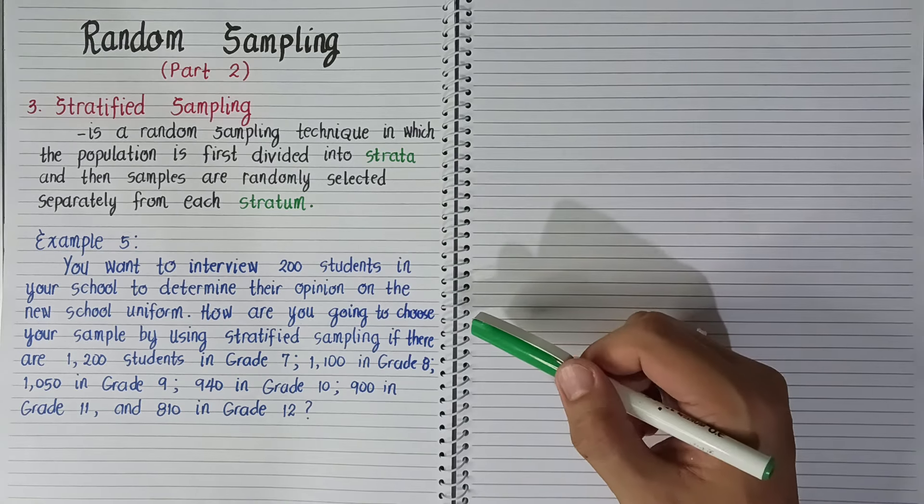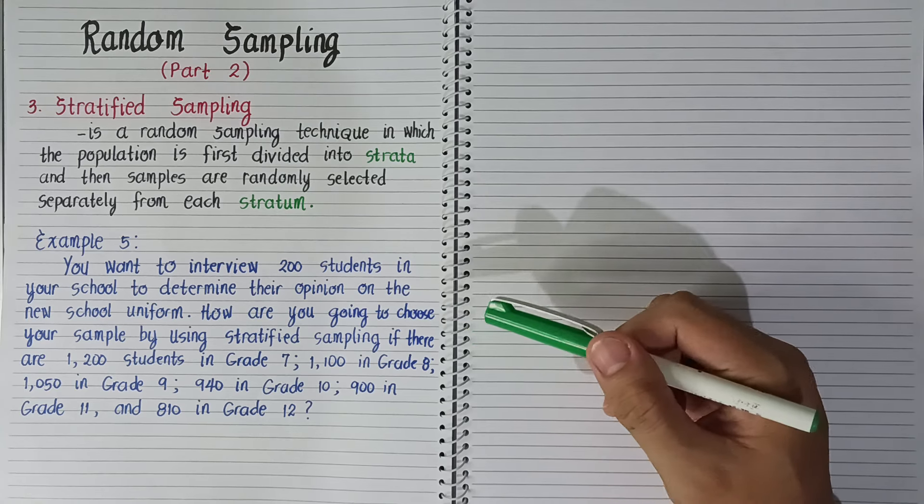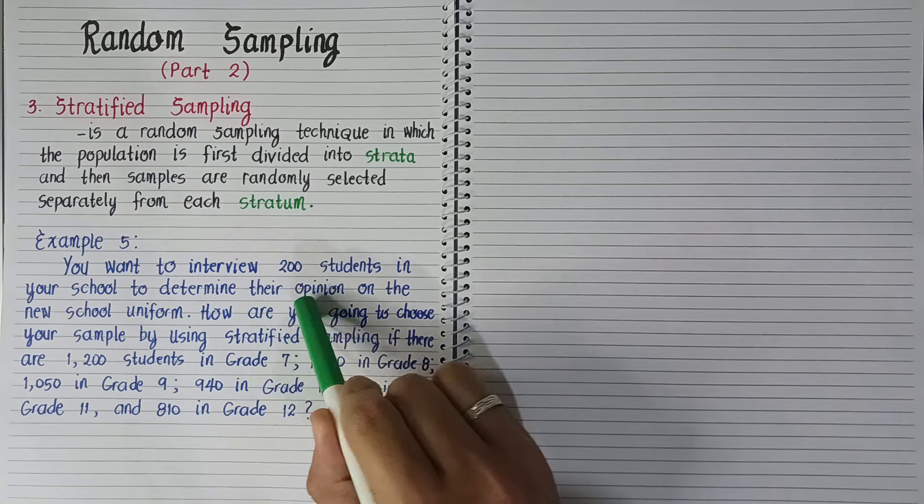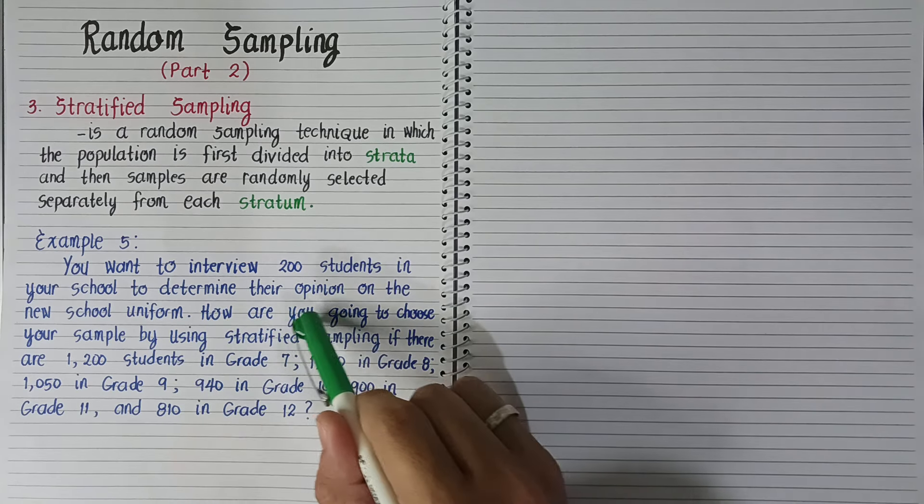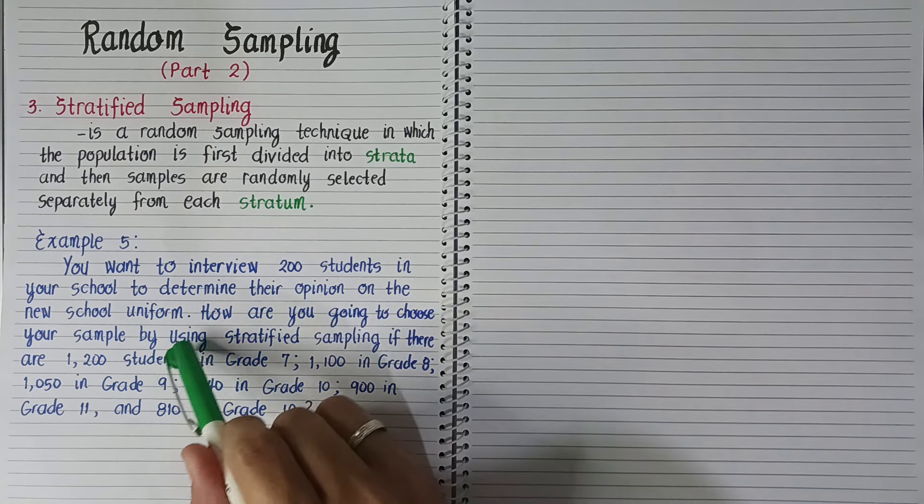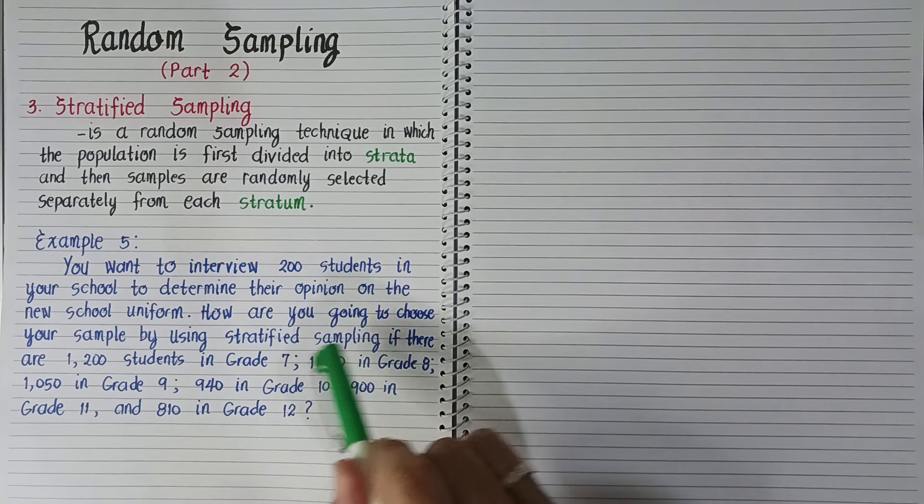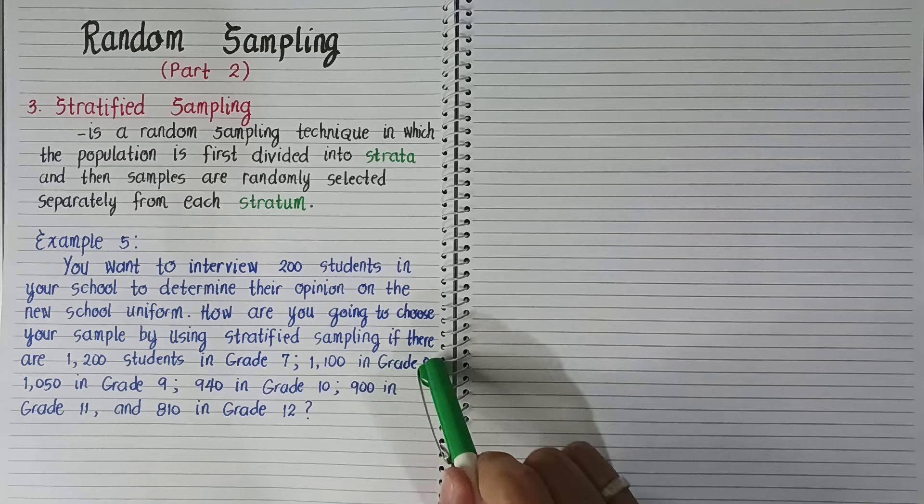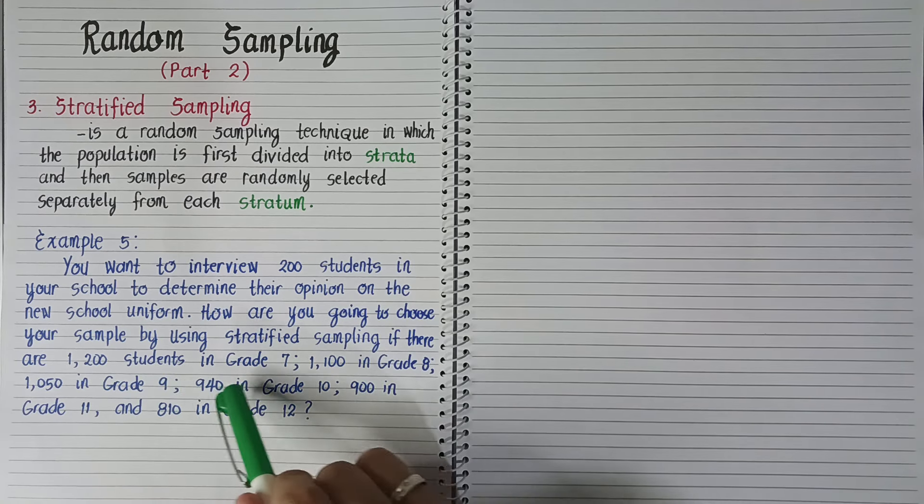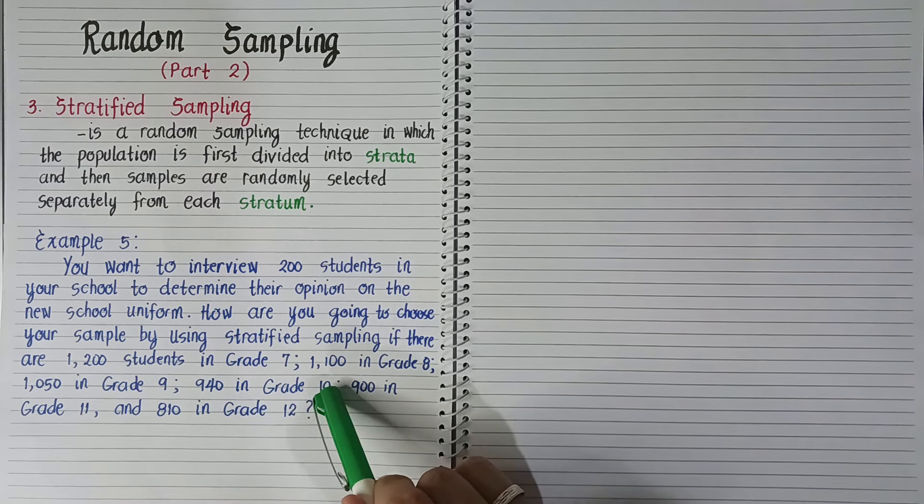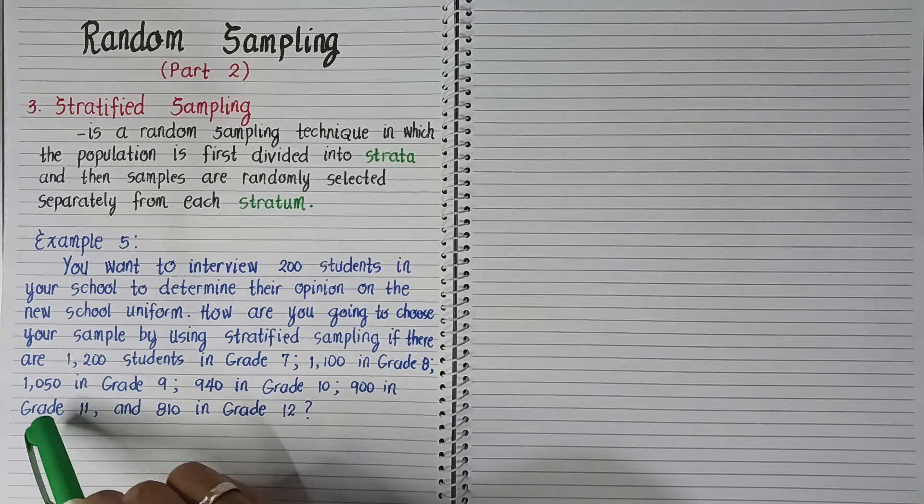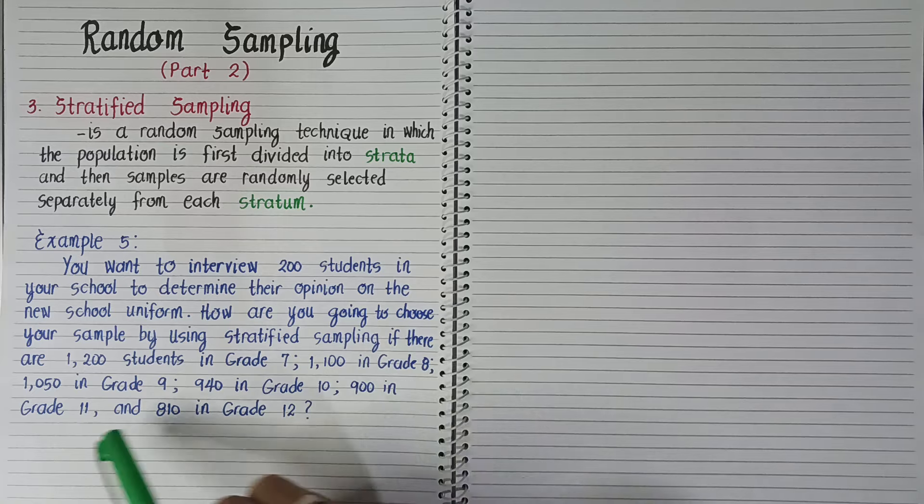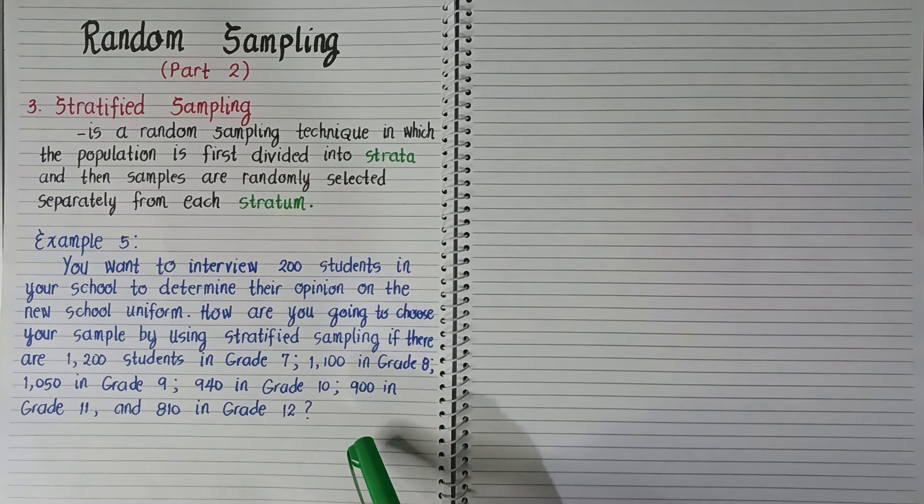Now, let's answer example number 5. You want to interview 200 students in your school to determine their opinion on the new school uniform. How are you going to choose your sample by using stratified sampling if there are 1,200 students in grade 7, 1,100 in grade 8, 1,050 in grade 9, 940 in grade 10, 900 in grade 11, and 810 students in grade 12?